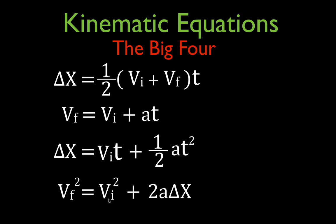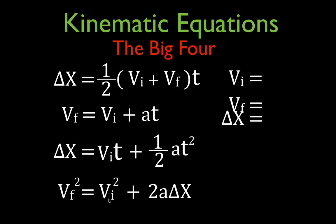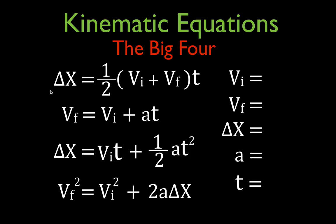We have four equations and in these four equations we have five different variables: the initial velocity, the final velocity, the change in position, the acceleration, and the time. We can use these equations to solve for any of these five variables. In typical problems you will be given three of these variables and asked to solve for the fourth. Each equation has four variables in it, so if you're given three you can solve for the fourth. For example, the first equation has change in position, initial velocity, final velocity, and time.